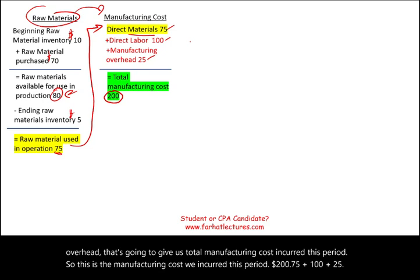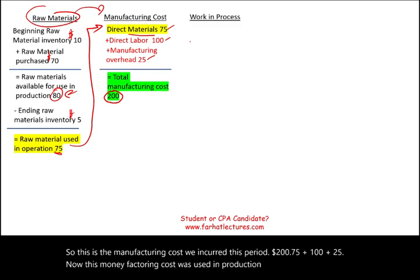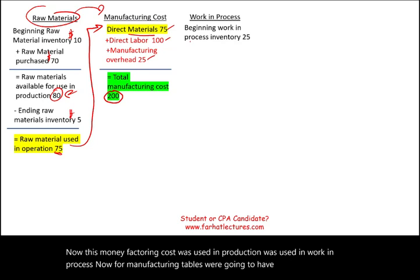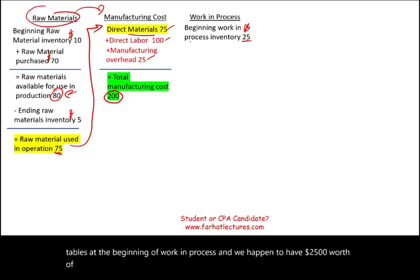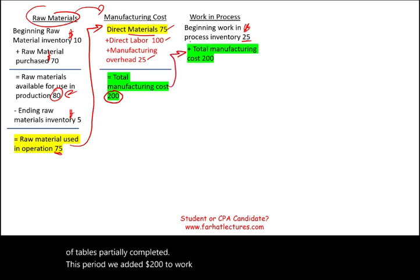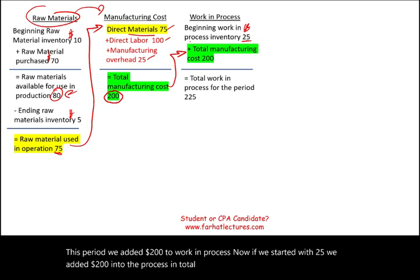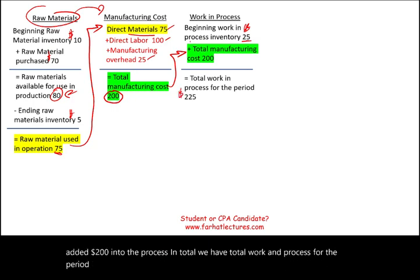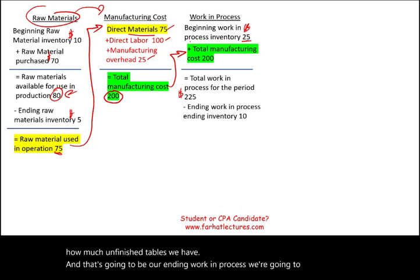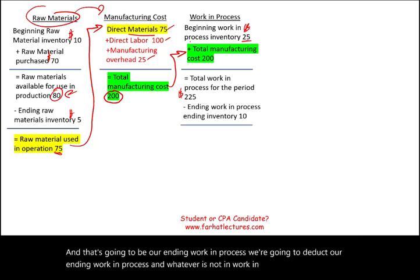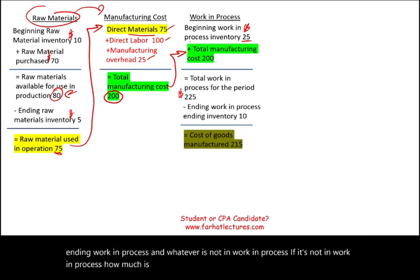This manufacturing cost was used in production, in work in process. For manufacturing tables we have some unfinished tables at the beginning of work in process — $25 worth of partially completed tables. This period we added $200 to work in process. Starting with $25 and adding $200 gives us total work in process of $225. We then count unfinished tables remaining as ending work in process, deduct it, and whatever is not still in work in process — $215 — is the cost of goods manufactured this period.